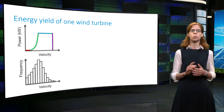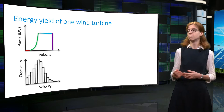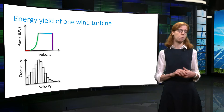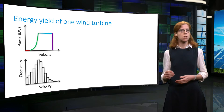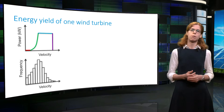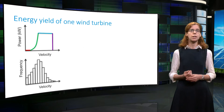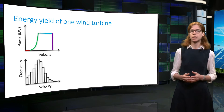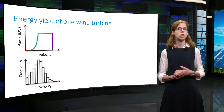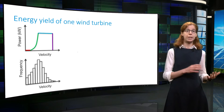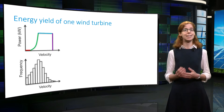So imagine that we know the power curve of a wind turbine, that is the power produced by the wind turbine for each wind speed. Suppose that we also know the wind characteristics at the turbine location. This is represented by a histogram, or probability density function, showing how many times a certain wind speed occurs at that location.